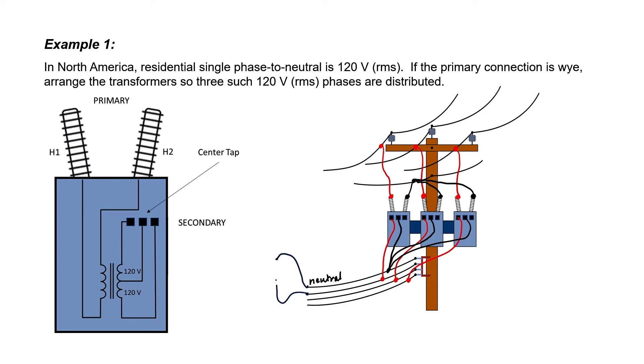If I were to take a voltmeter and now measure the voltage difference in RMS between any of these three phases to neutral, I would get 120 volts RMS. On the other hand, if I were to measure the voltage between any of the three phases, then I would measure 208 volts RMS. That's 120 times the square root of three.